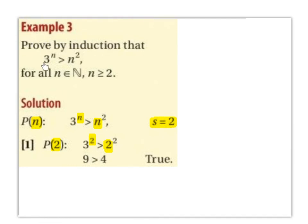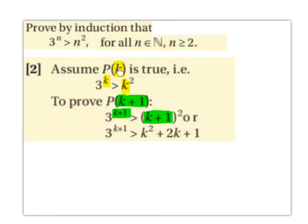Prove by induction that 3^n > n², for all n ∈ ℕ where n ≥ 2. So P(n) is 3^n > n², where s = 2. Step 1: P(2) gives 3² > 2², i.e. 9 > 4, which is true. Step 2: Assume P(k) is true, i.e. 3^k > k². We want to prove P(k+1): 3^(k+1) > (k+1)² = k²+2k+1.